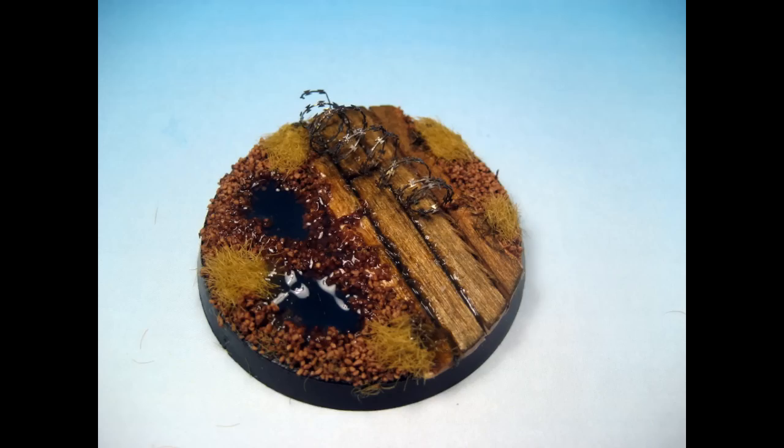And here we are again with the finished base, with the exception of some paint for the razor wire and the wash I put onto the duck boards. This is made using only the materials included in the Instant Theme Kit Trenchworks. If you have any questions, email mrjustin at secretweaponminiatures.com and I'll be happy to help.